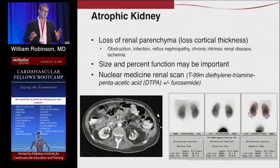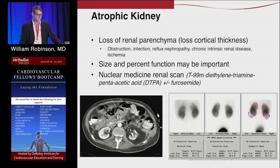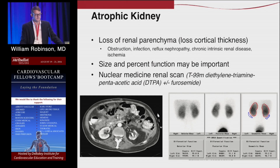Atrophic kidney is something you're going to come across a lot — it is an important thing. You will see small kidneys on many scans. There are a lot of reasons to have small kidneys, but the one we usually care about is ischemia. What you have to decide is whether the kidney is worth saving, both in instances of renal insufficiency and in aortic reconstructions, as it determines your operative plan.